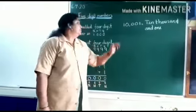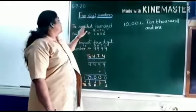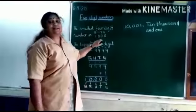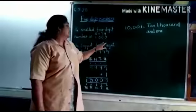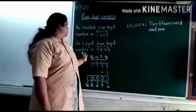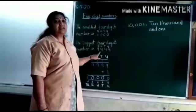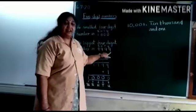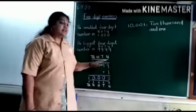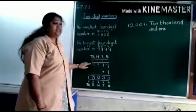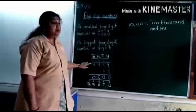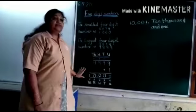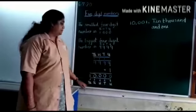Children, you all know the smallest four digit number is one thousand and the biggest four digit number is nine thousand nine hundred and ninety nine. Now using the biggest four digit number and adding one to it, we will get a five digit number.